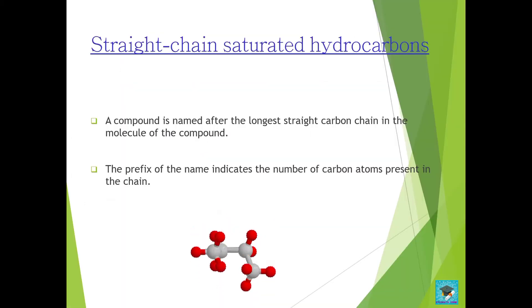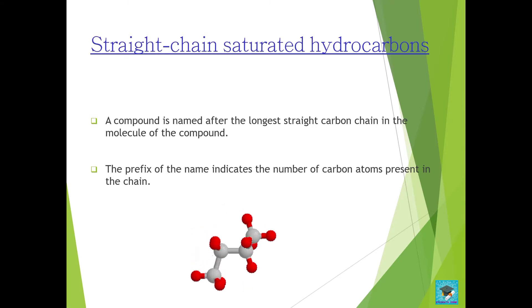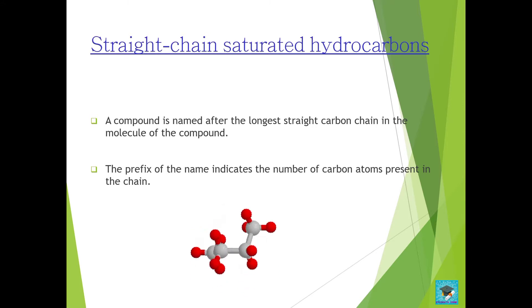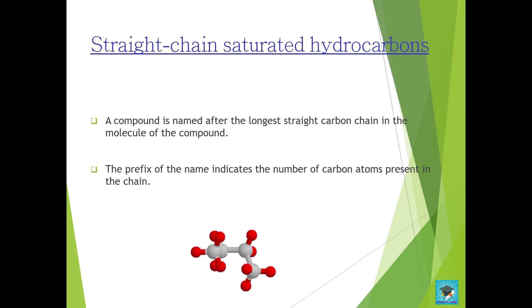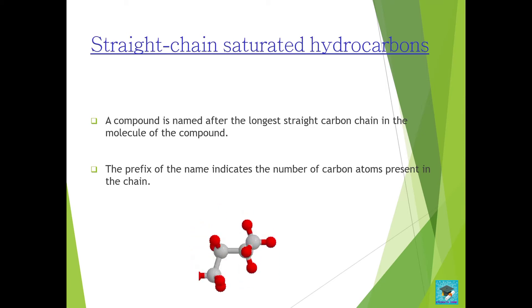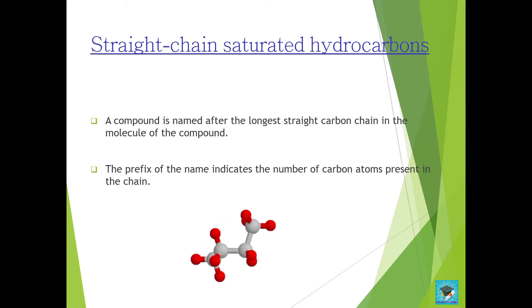A compound is named after the longest straight carbon chain in the molecule of the compound. The prefix of the name indicates the number of carbon atoms present in the chain.